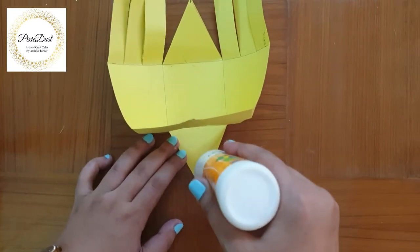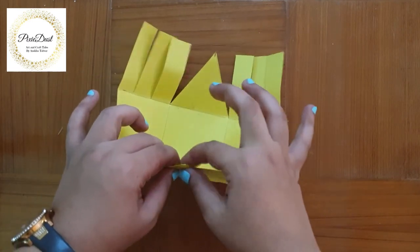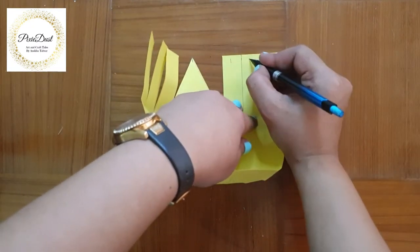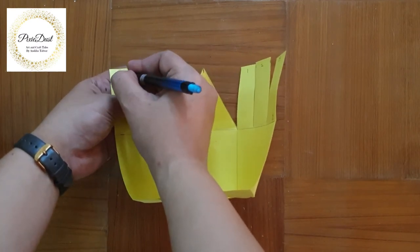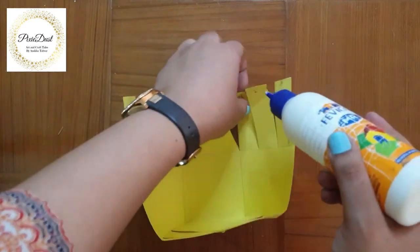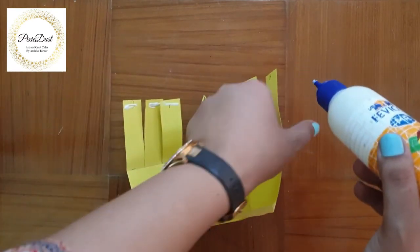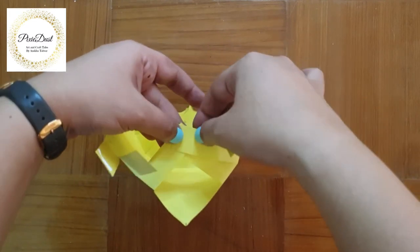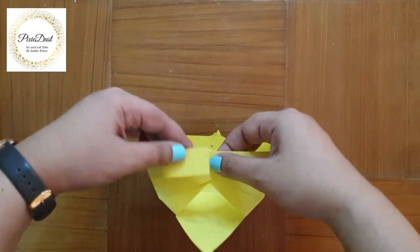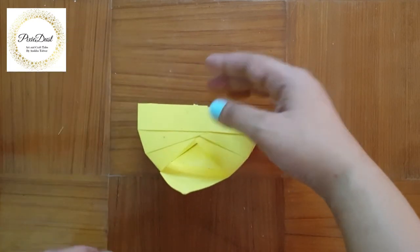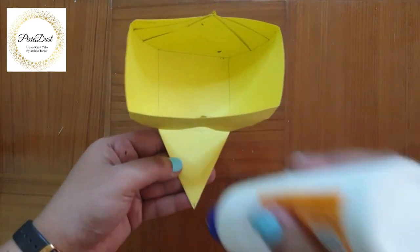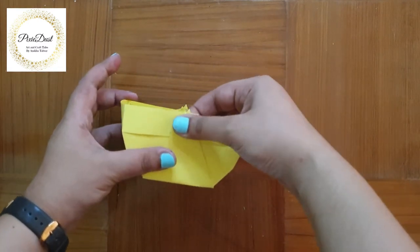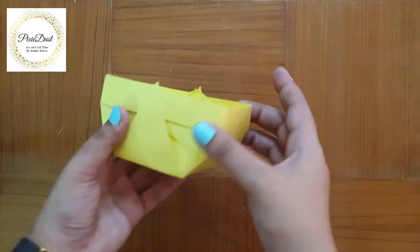Now I'm going to attach the triangle on the flap. I will repeat the same step for the other side. Now the base of my basket is ready.